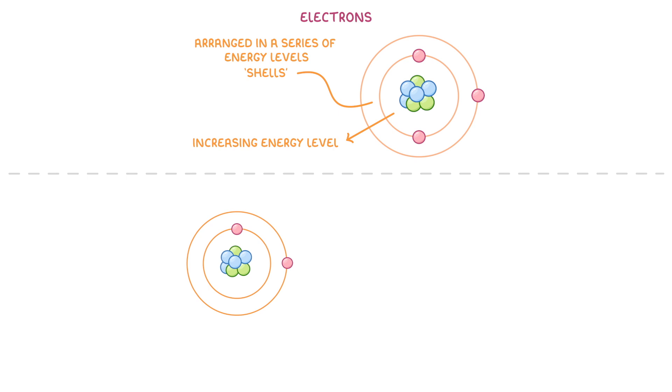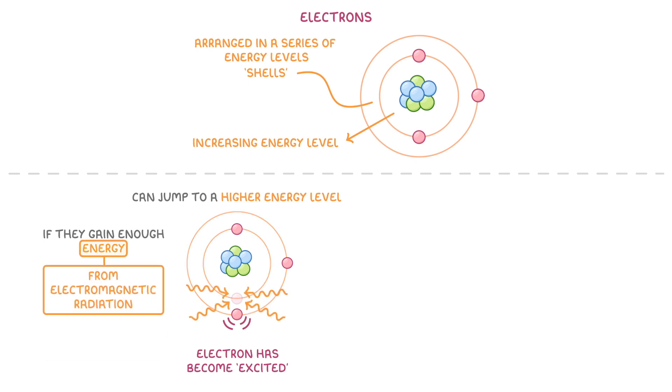Although electrons normally stick to a single shell as they orbit the nucleus, they can occasionally jump up to a higher energy level if they gain enough energy. And at that point, we'd say that the electron has become excited. The energy for this comes from electromagnetic radiation, and it will only work if the radiation carries just the right amount of energy to get the electron from one energy level to the next.